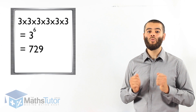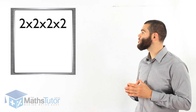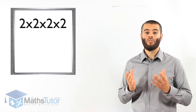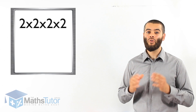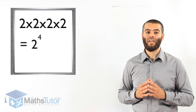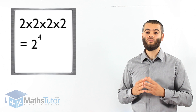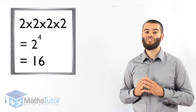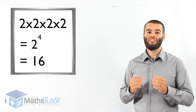Same thing when we have a number sentence that says 2 times 2 times 2 times 2. It is 2 times itself, 4 times. So that means we write it as 2 is the base number and 4 is the index — 2 to the power of 4. 2 times 2 is 4, times 2 is 8, times 2 is 16. So 2 to the power of 4 is 16.